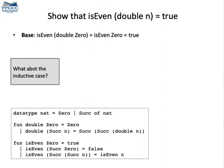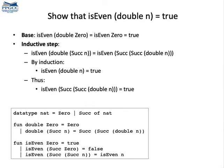In the base case, we have n equal to zero. Is even of zero is true, and double of zero is zero itself. So, is even of double of zero is true. And what about the inductive case? Would you like to think about it? We assume that the theorem is true for n. So, what about succ of n?